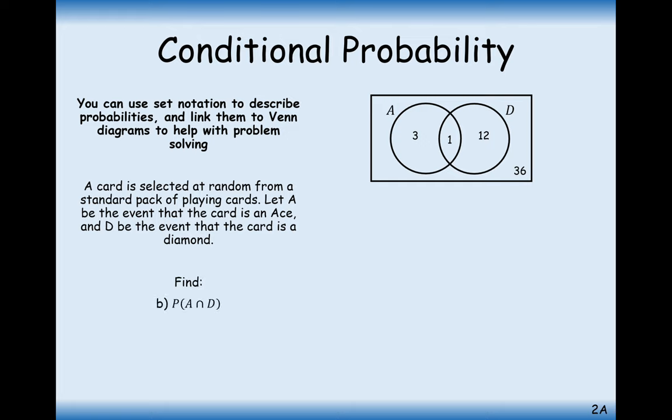This answers some probability questions. We want to find the probability of A intersection D. The intersection of A and D is this one card here, that's one card out of a total of 52 playing cards, so that's one out of 52. It's a probability of a card being an ace and a diamond, treating the intersection symbol as 'and'.